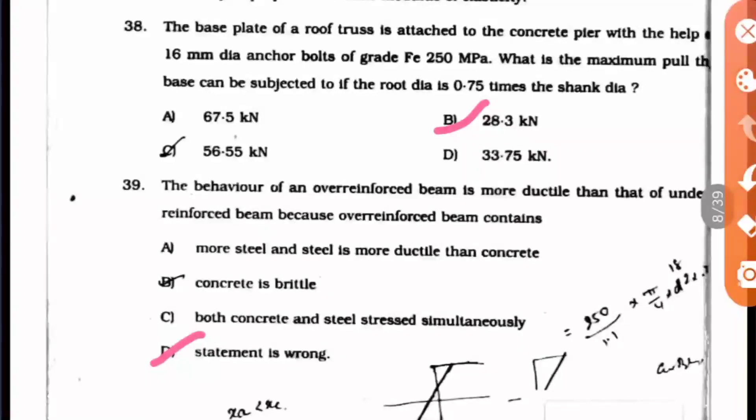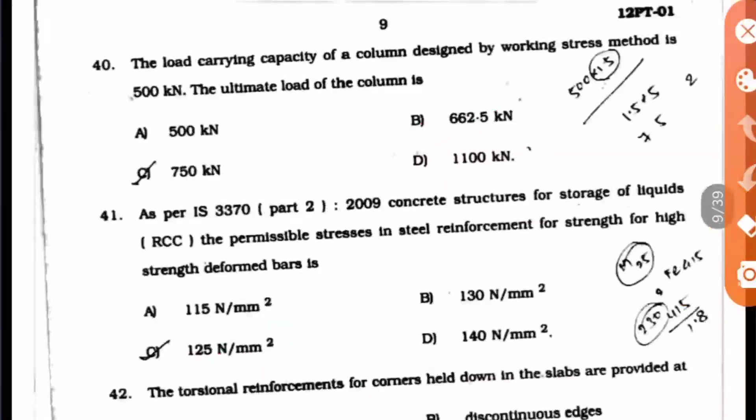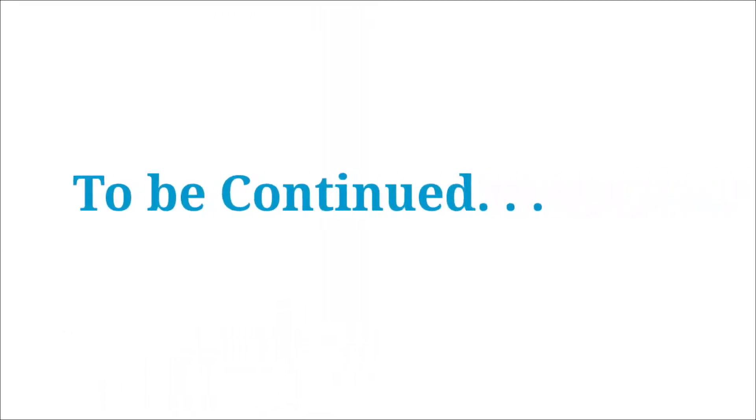Question 40: The load carrying capacity of a column designed by working stress method is 500 kN. The ultimate load of the column is found by multiplying 500 by 1.5 times, giving 750 kN. Option C is the right answer. Thank you and keep watching.